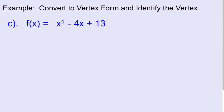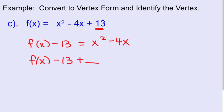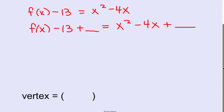Last example. Convert to vertex form by completing the square. So we're going to subtract 13 from both sides. So now it's x squared minus 4x. Now I'm going to go plus with a blank equals x squared minus 4x plus with a blank. Now we're set to complete the square.